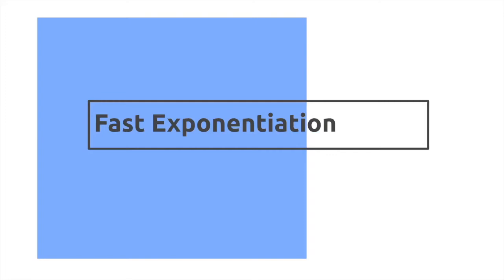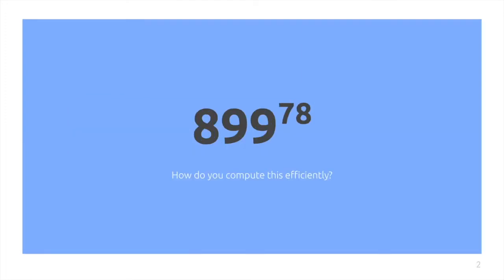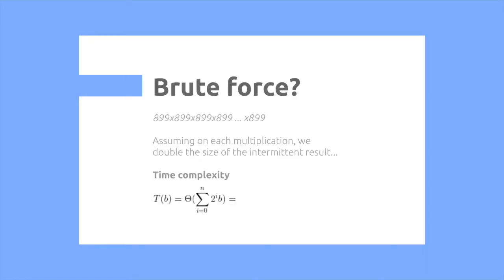Fast exponentiation: How do you efficiently compute 899 to the power of 78? We can use brute force where we take 899 and multiply it 78 times. Assuming on each multiplication we double the size of the intermittent result, we get the following: